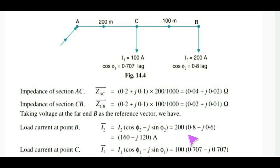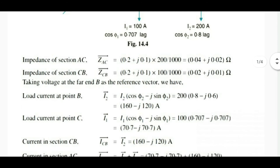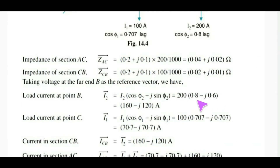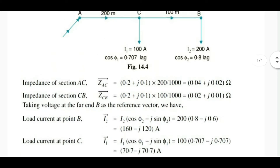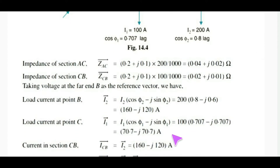I2 = I2(cosφ2 − jsinφ2). Load current at point C: vector I1 = I1(cosφ1 − jsinφ1), where φ1 corresponds to the 0.707 power factor lagging load at the intermediate tap point C.